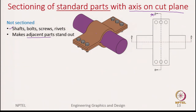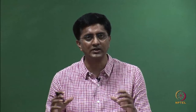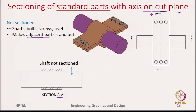This is the top view of the assembly, with two section lines: section A-A and section B-B. Let us look at how we implement this practice. Starting with section A-A, we see that the axis of this shaft is on the cutting plane, so the shaft is not sectioned. However, the clamps coming on the top and bottom need to be hatched because they do not fall under the standard parts.